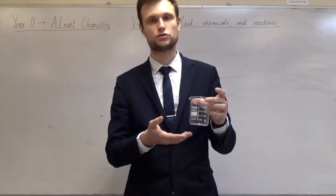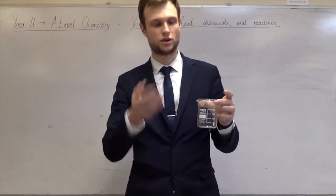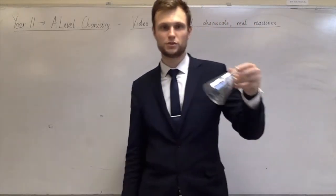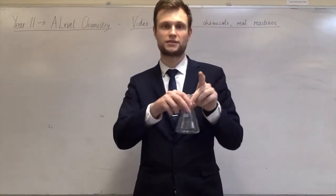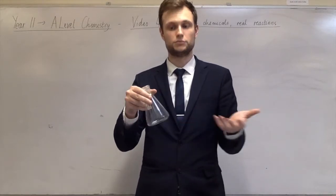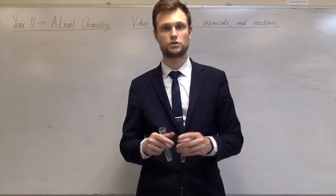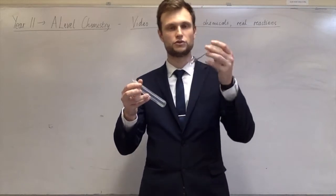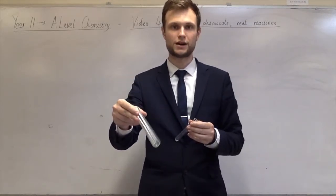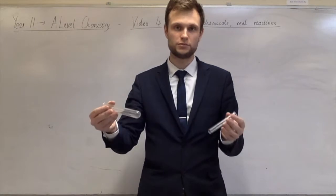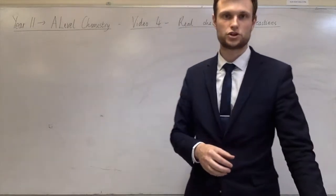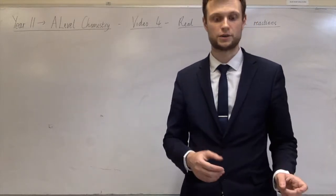A beaker is mainly used to just contain a reaction - you do the reaction in the beaker so you can look at it. A conical flask is similar, but conical flasks are shaped so you can swirl very easily without losing any of the liquid. If you want to do a reaction on a smaller scale, you often use a test tube or a boiling tube, or if you want to heat it and move it around at the same time. These are all just used to do reactions.